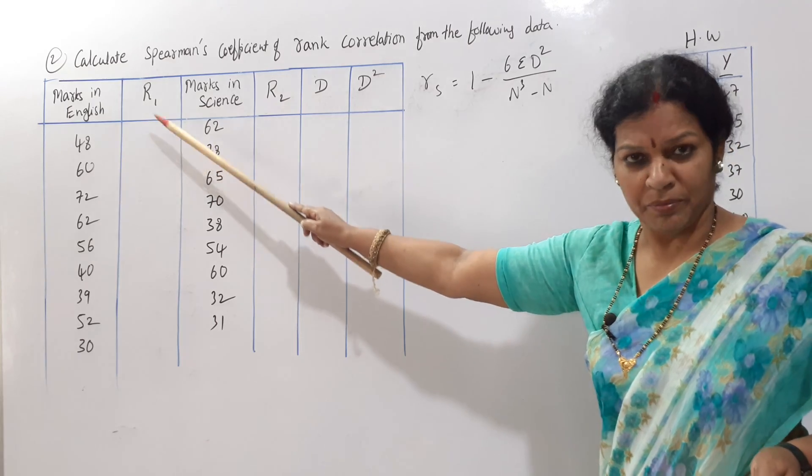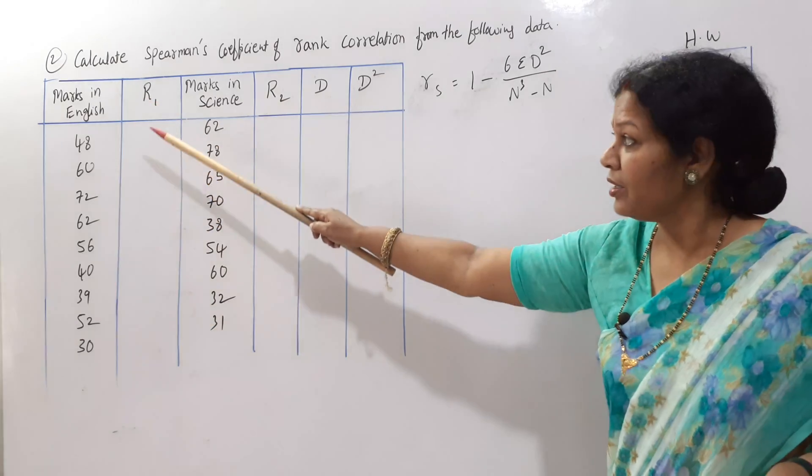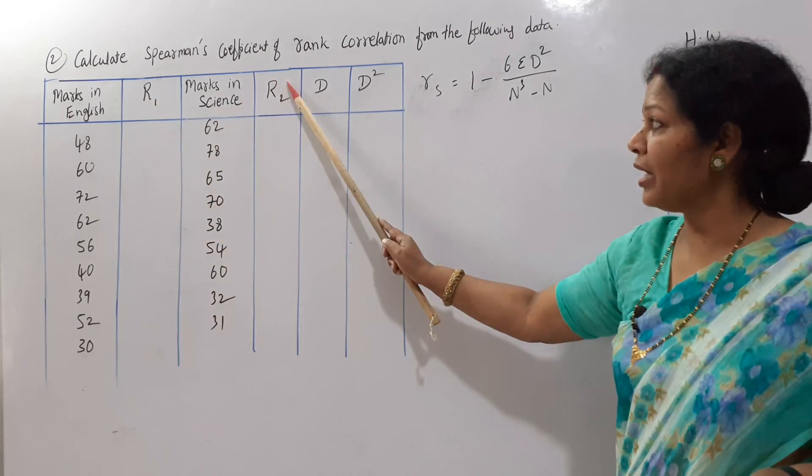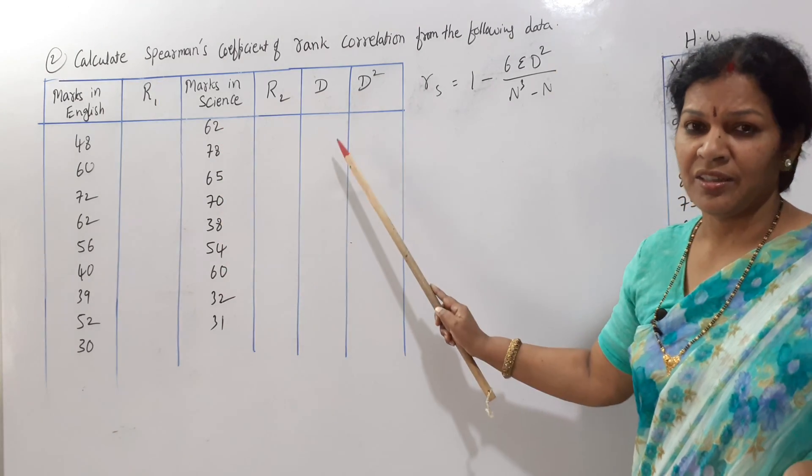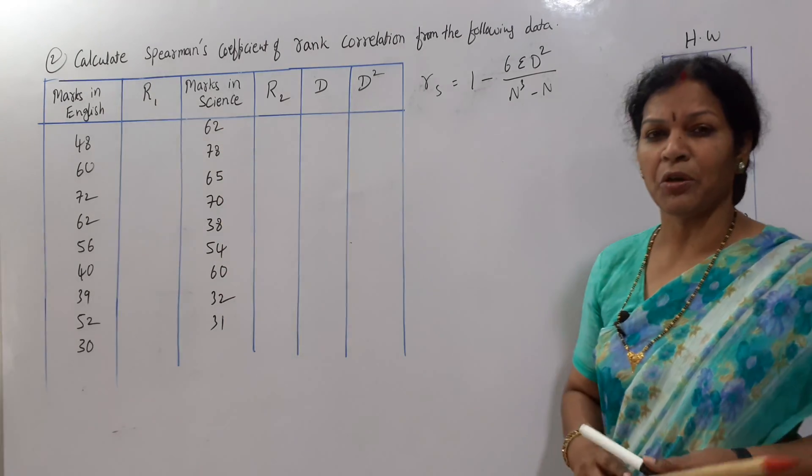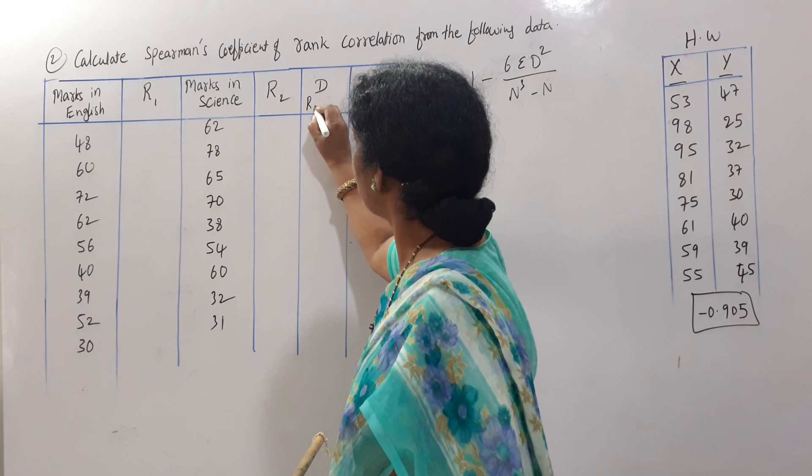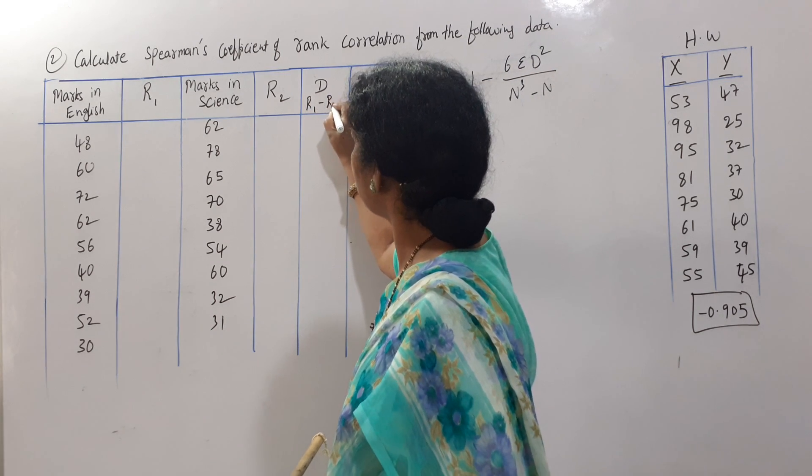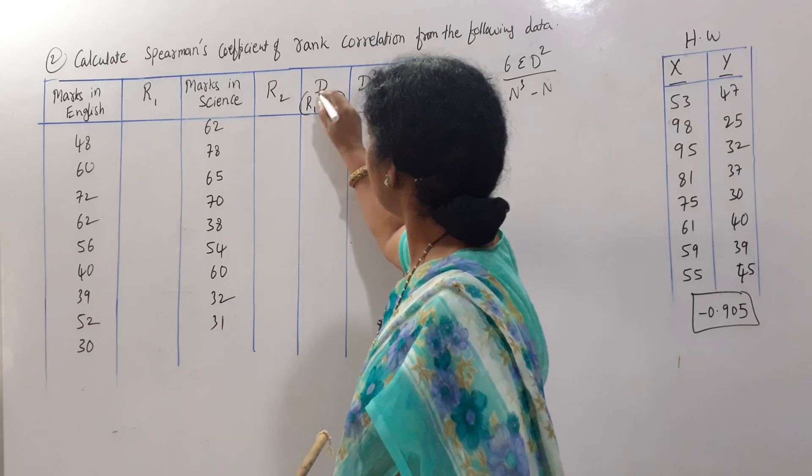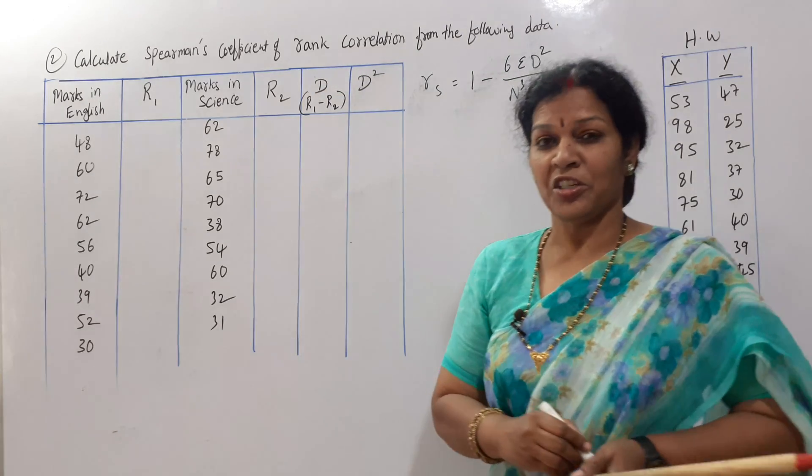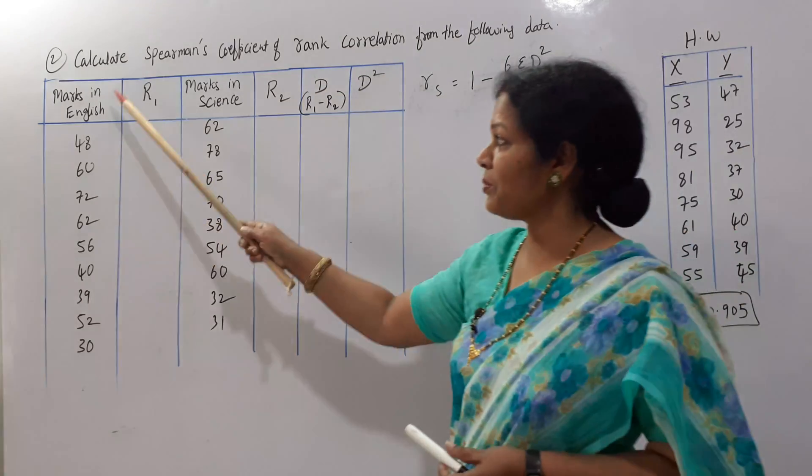The R1 means ranks we are giving for the subject of English, R2 for the subject of Science we are giving the rank. And D, D means how do you get D? R1 minus R2. R1 minus R2 is D and D square we are going to do. Shall we give the ranks for this marks?